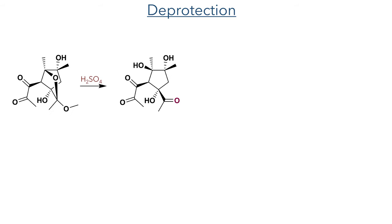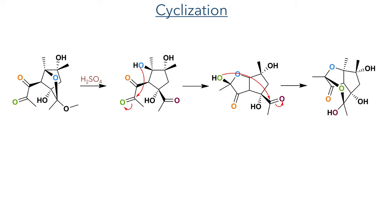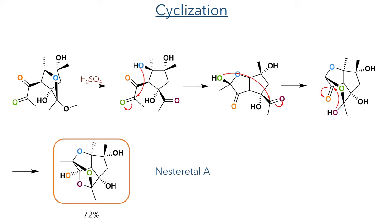With all of the oxygen groups now installed, the synthesis could be completed by first deprotecting the intramolecular acetal using sulfuric acid in water and then allowing the molecule to cyclize. The tertiary hydroxyl group on the same face of the ring as the ketone groups attacks the carbonyl of the diketone fragment to form a five-membered ring and produces a hemiacetal. This hemiacetal further reacts with another ketone to again form a cyclic five-membered hemiacetal, which undergoes the final intramolecular attack, completing the synthesis of Nesterital A in a 72% yield.